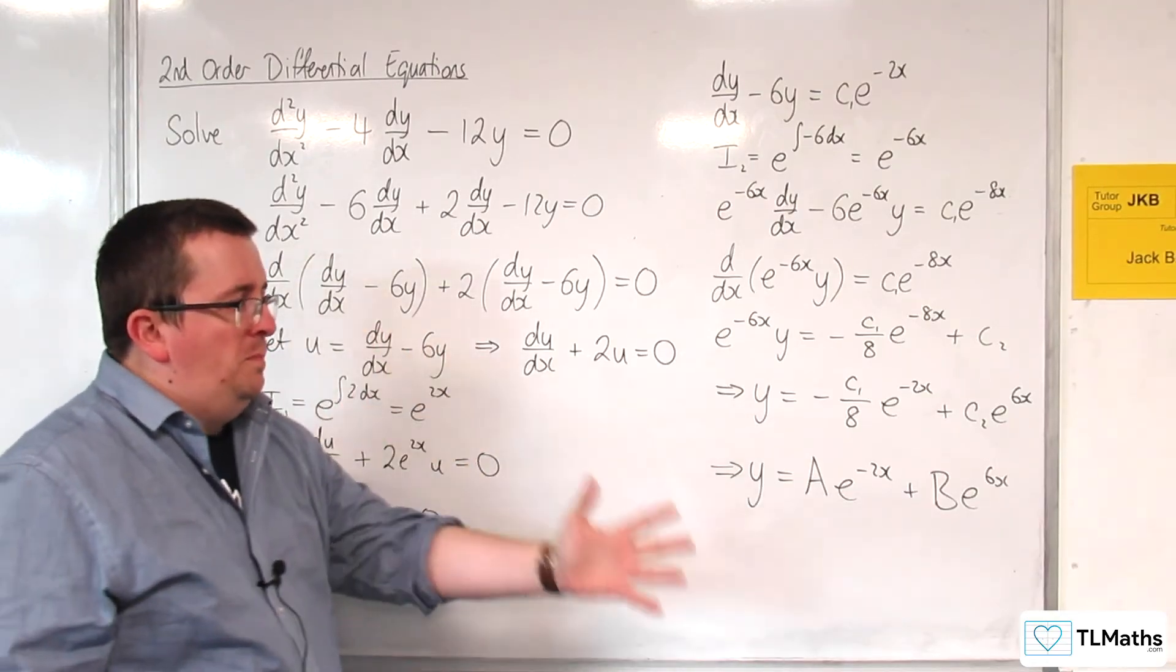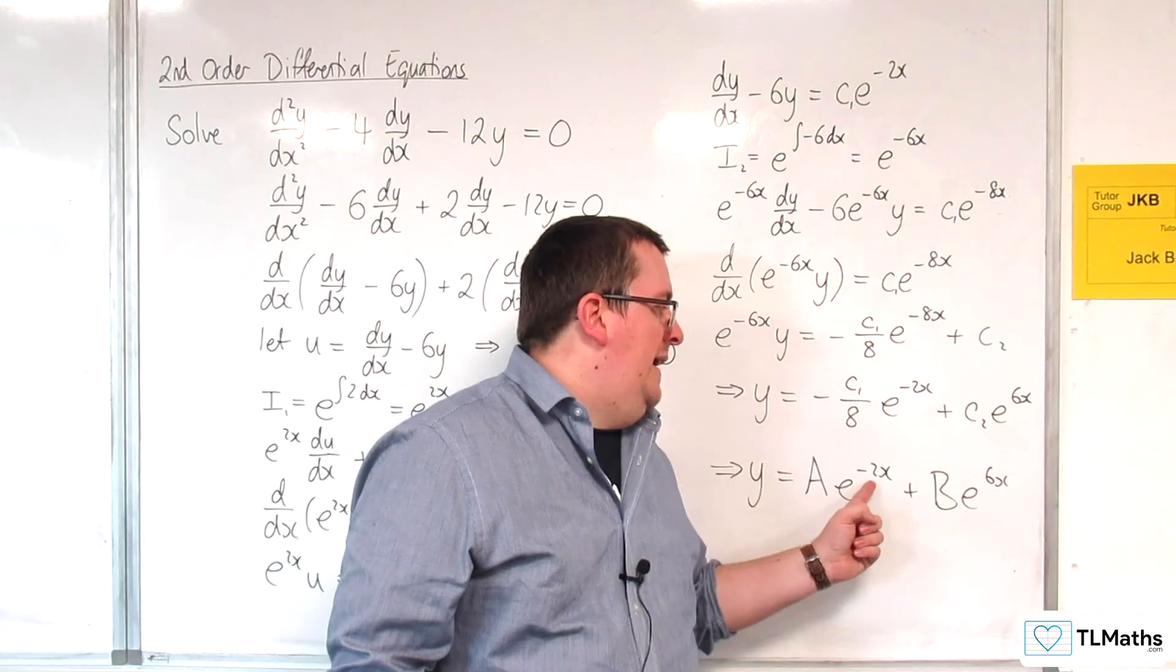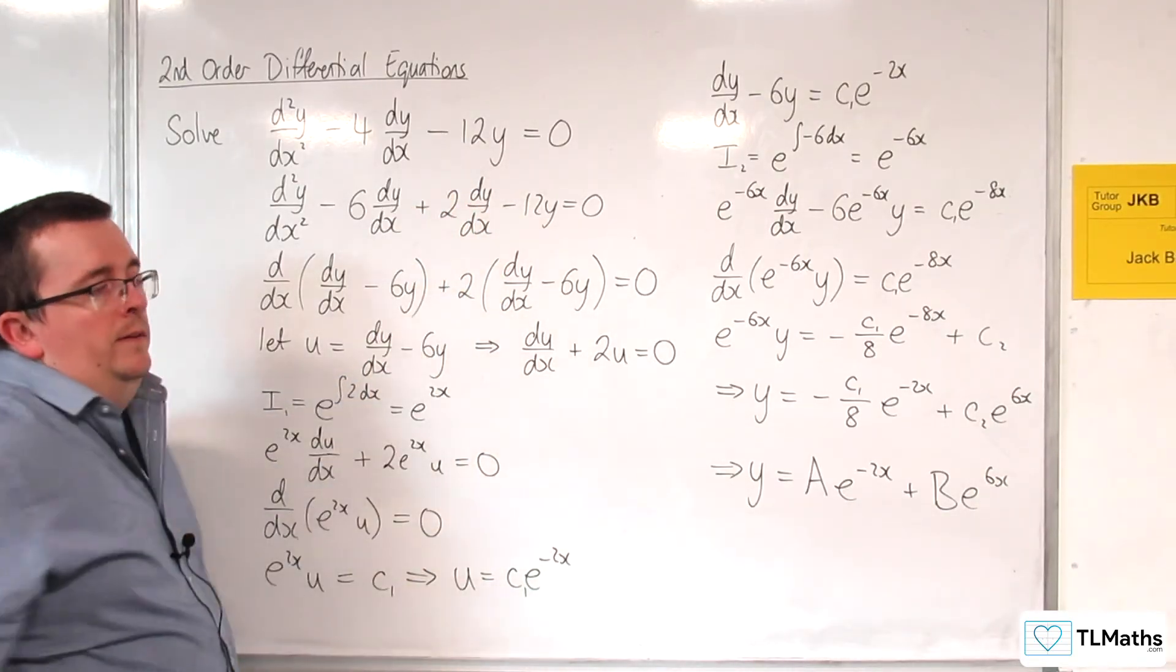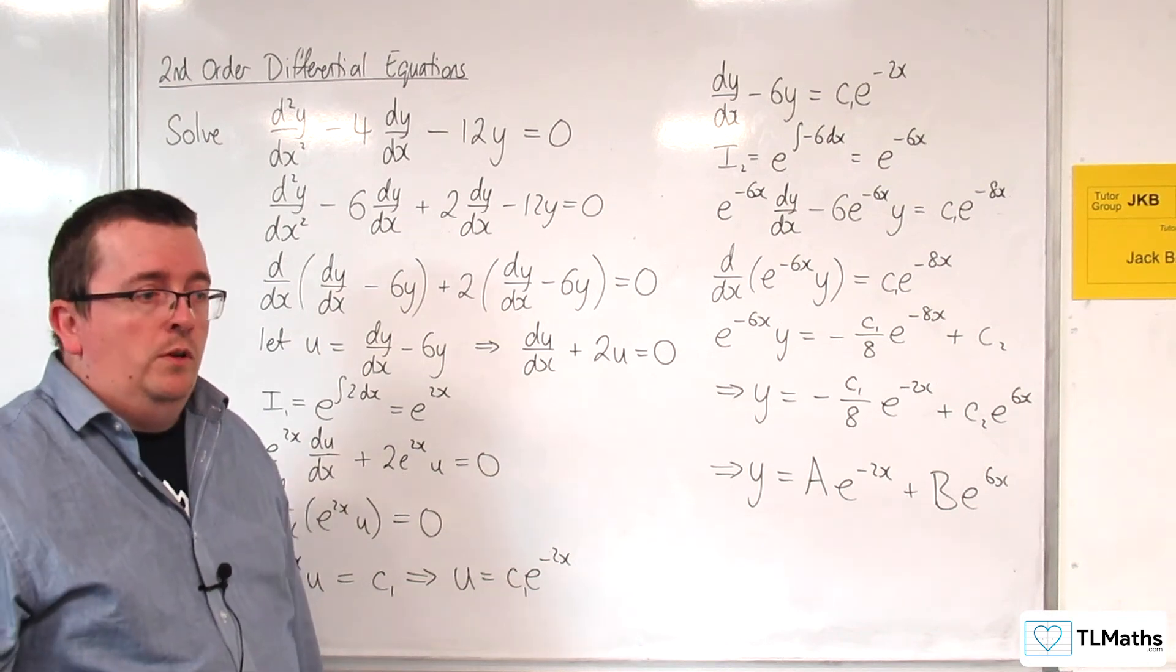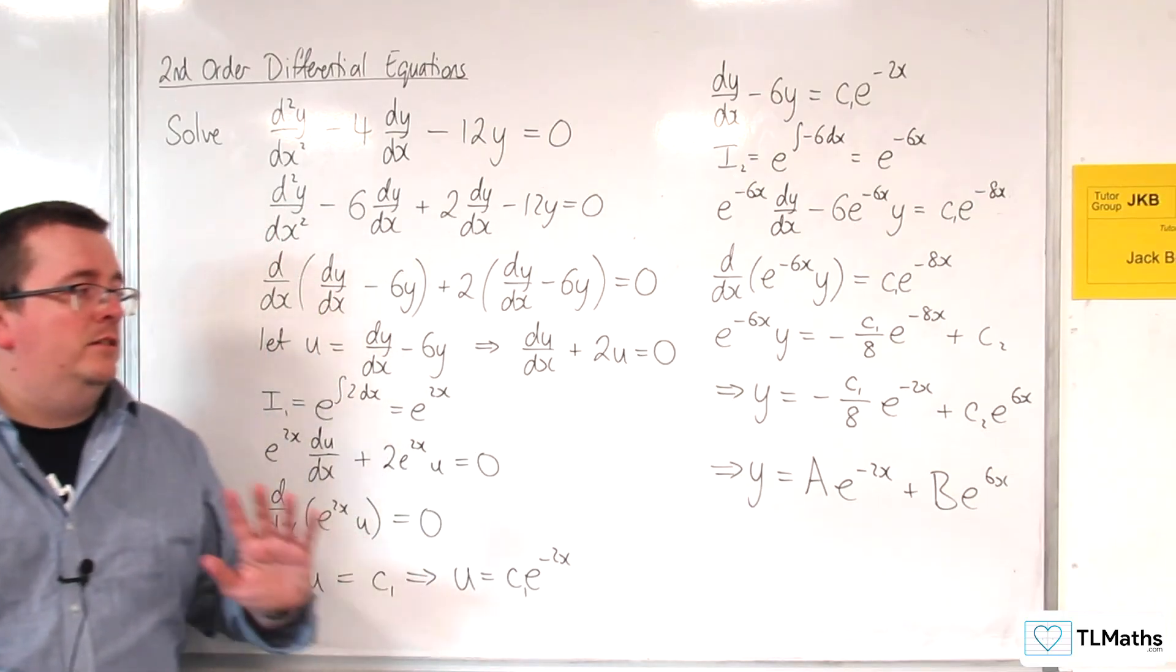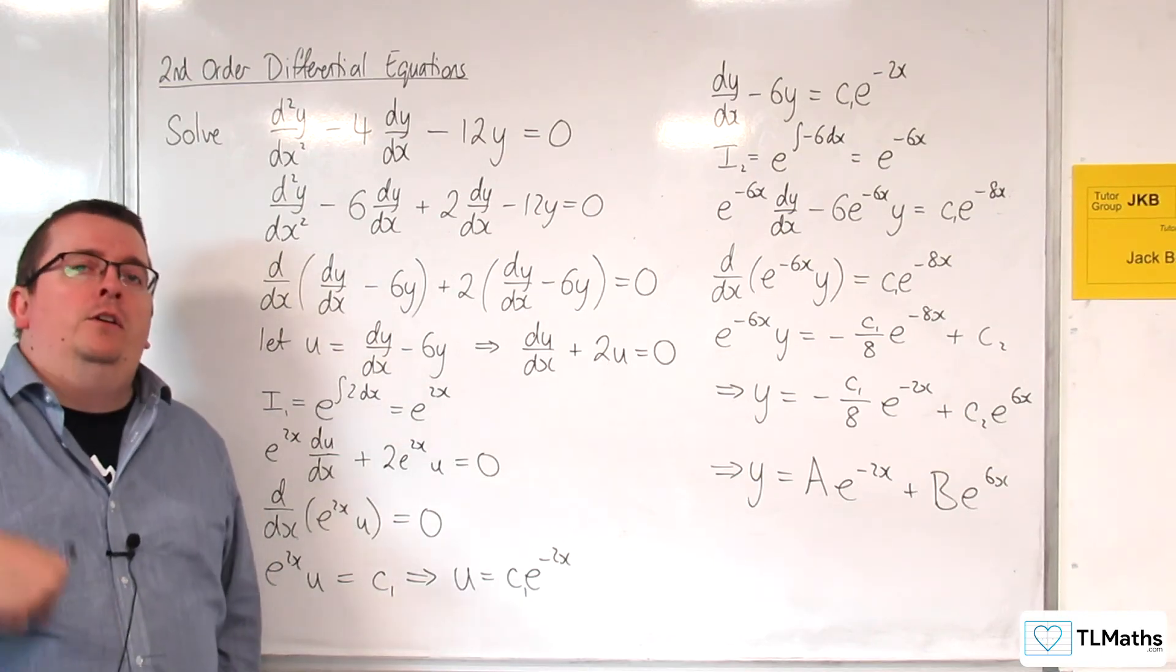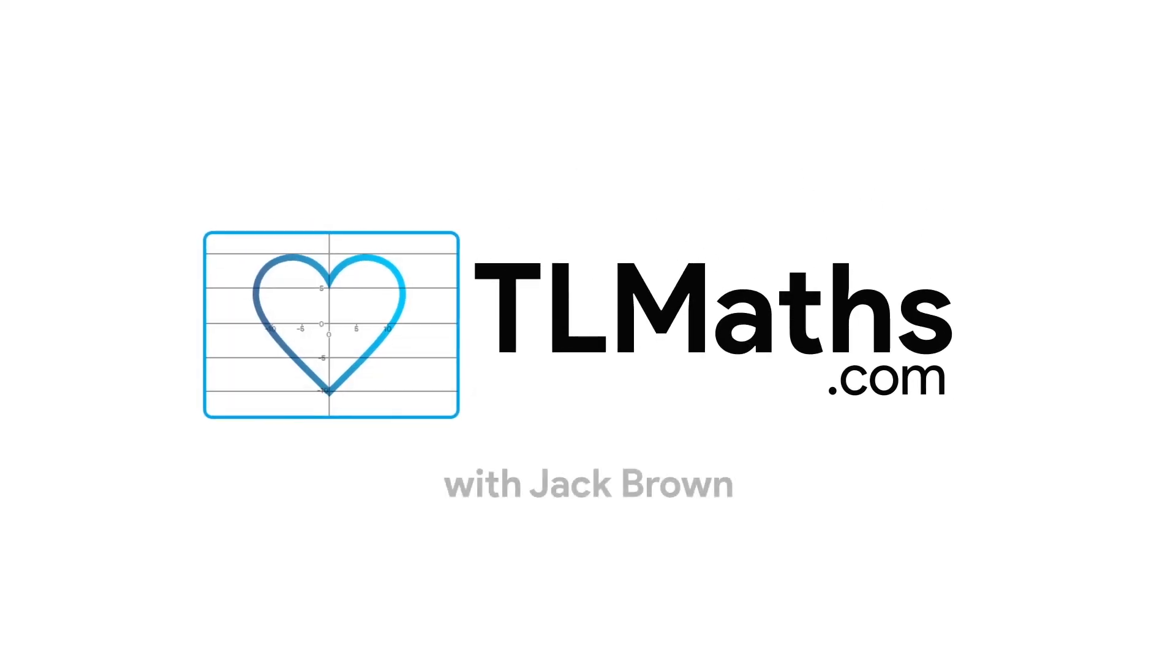The other thing you need to spot, and hopefully are spotting: Isn't it surprising that we have e^(-2x) and e^(6x), and the -2 and the 6 were the two numbers we started with, where we were saying we needed two numbers that multiply together to make -12, but add together to make -4. Is it a coincidence that we would arrive at those two numbers appearing there? The answer is no. It's not a coincidence. And that's going to lead us on to looking at the auxiliary equation, and how we can use that to inform what our solutions should look like.